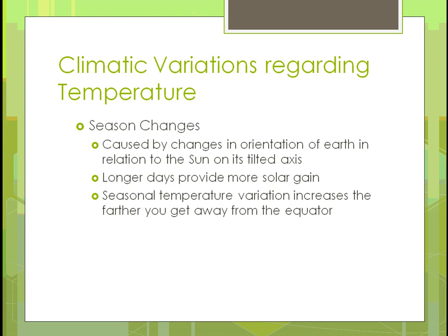For seasonal changes, they're caused by changes in the orientation of the earth in relation to the sun on its axis. The sun appears farther east or west rather than straight above — it's really the earth that's moving, not the sun. Based on that, you get longer or shorter days. In summer you have longer days and more solar gain, so plants can do photosynthesis, creating carbohydrates and sugars to grow and produce crops. This variation increases the farther you get from the equator, whereas at the equator it's fairly constant year-round, which is why multiple crops can be grown there.